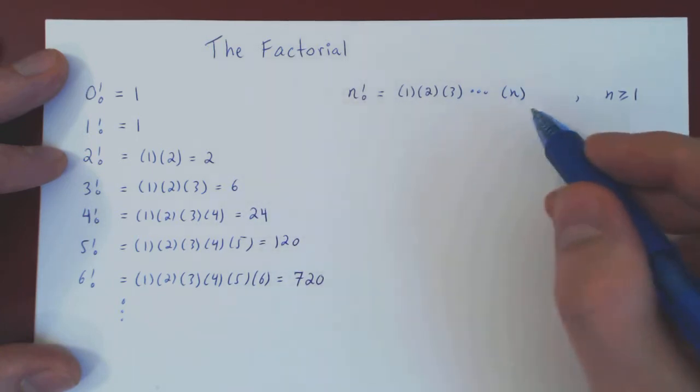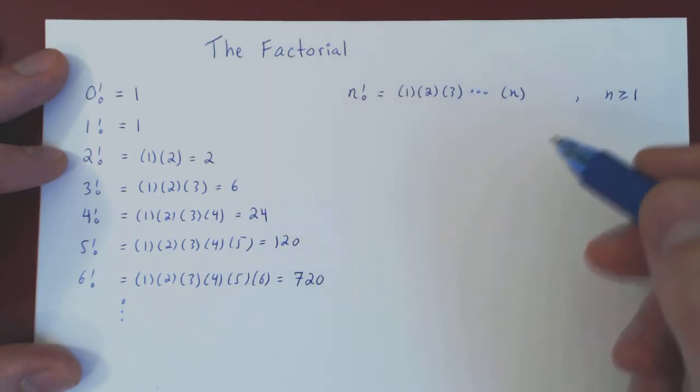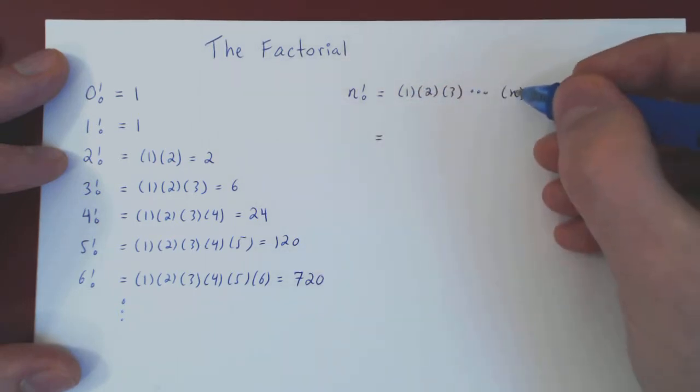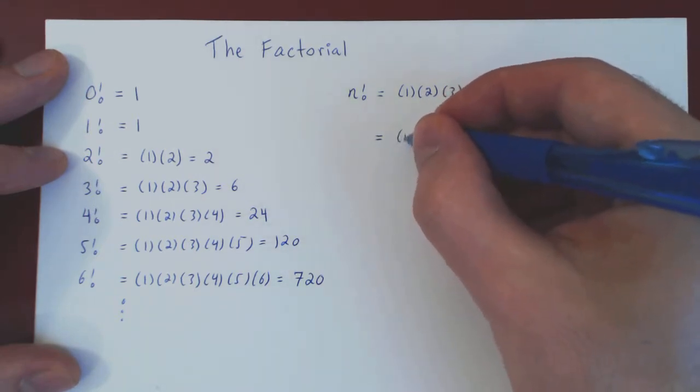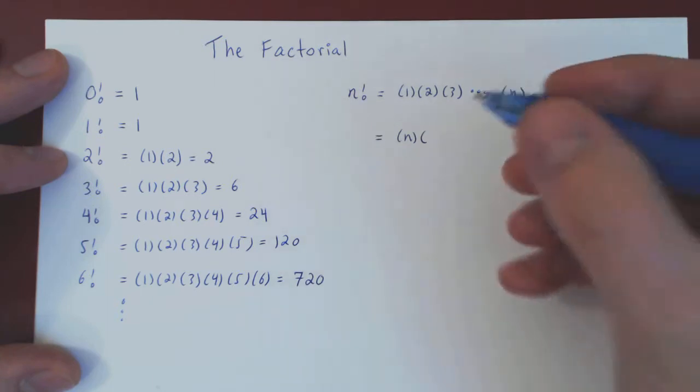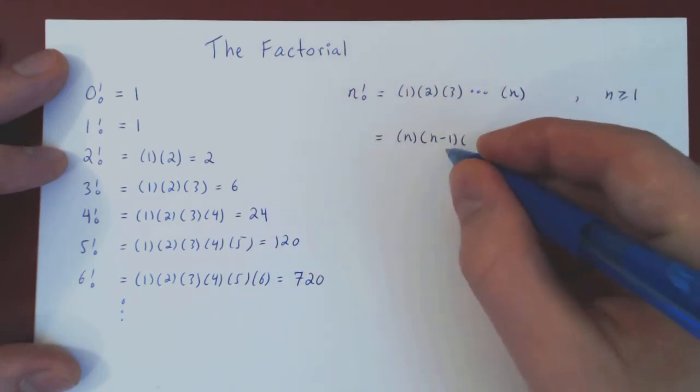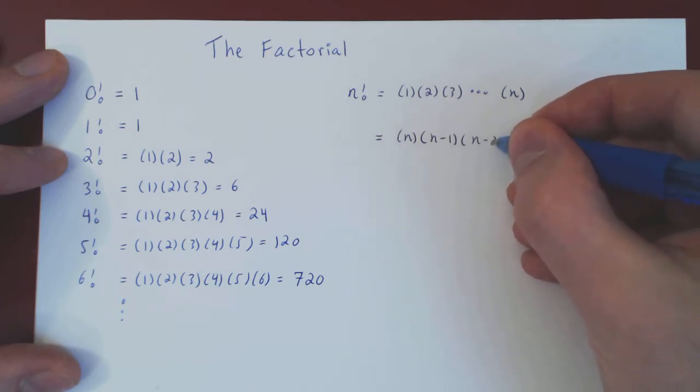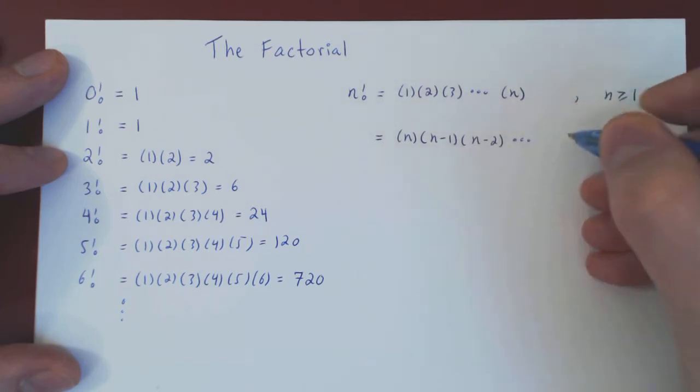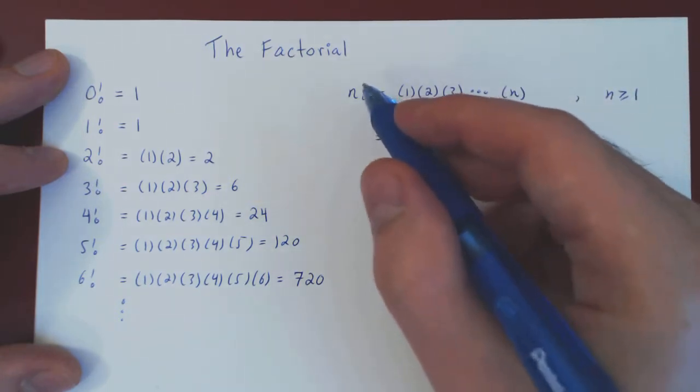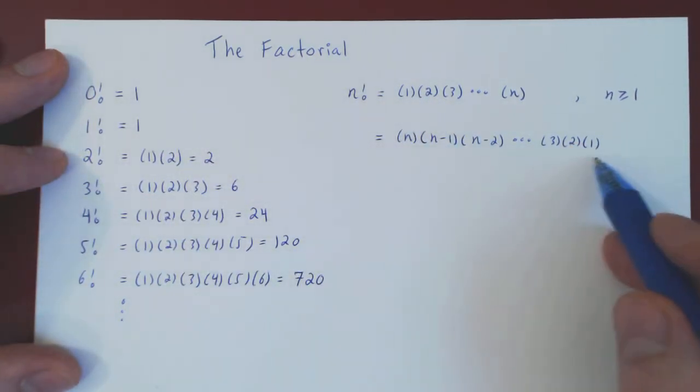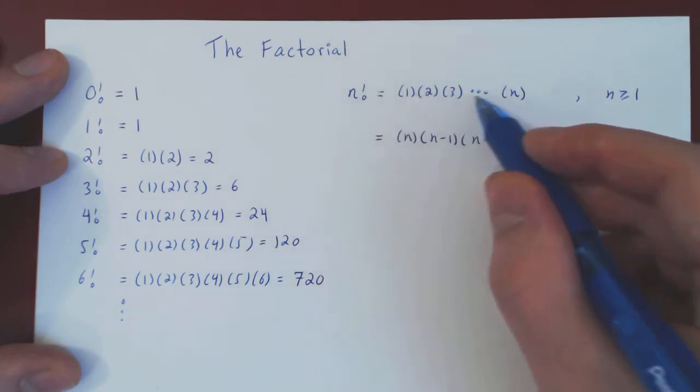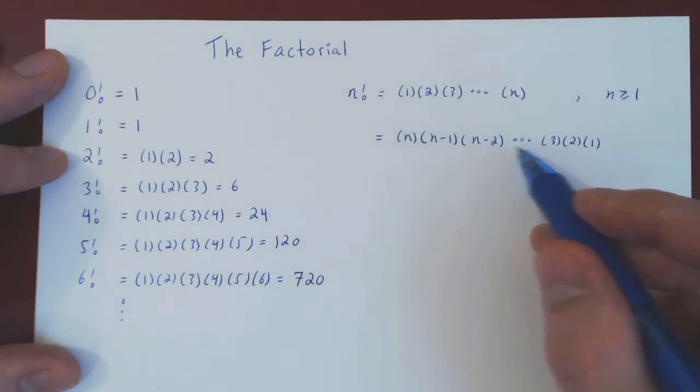So you can write the product going up from 1 to n, but you could also go backwards. You could write the product starting from n and going down to 1. So it's n times, if you go down by 1, it's n minus 1. Go down by another step, n minus 2, all the way down to 3 times 2 times 1. So really just think of it as 0 factorial is 1, and n factorial is the product of the first positive n integers, either written from 1 all the way up to n, or from n all the way down to 1.